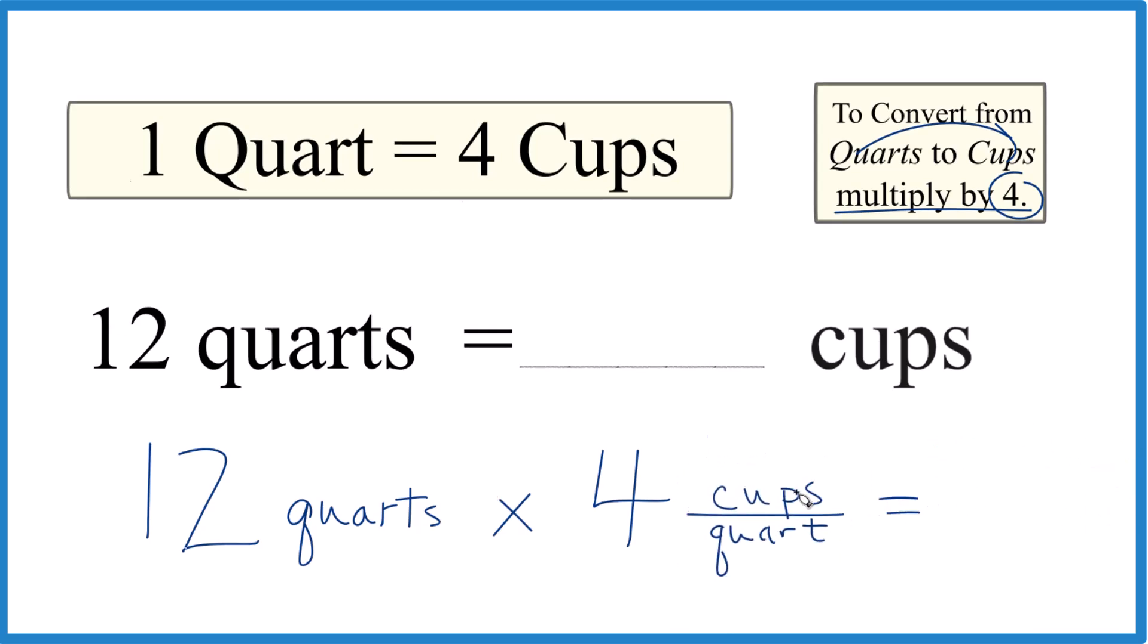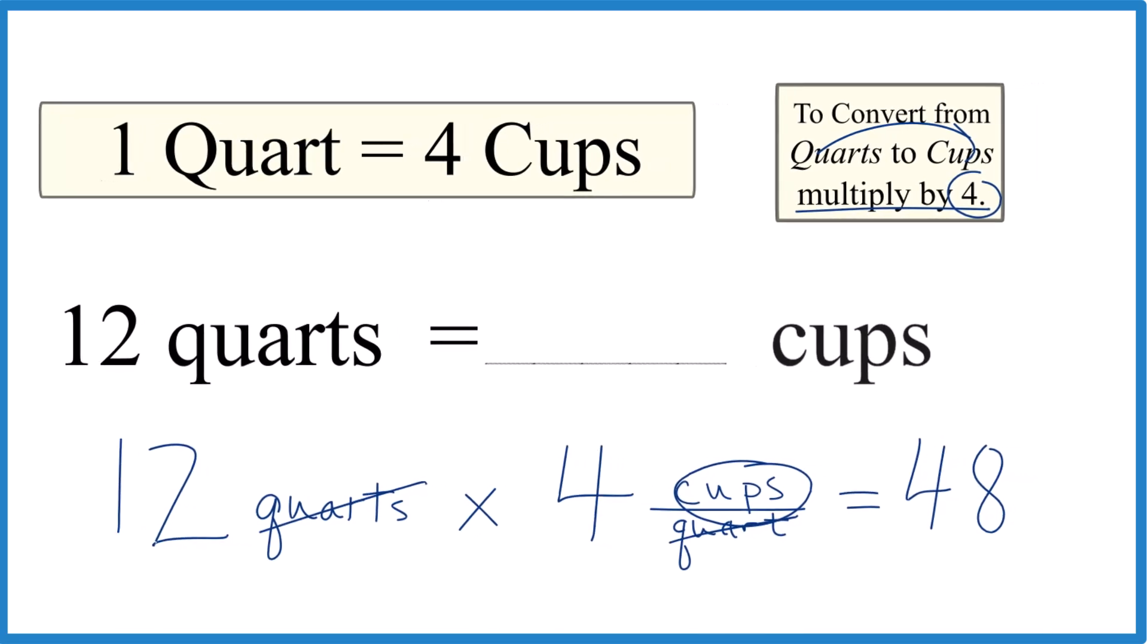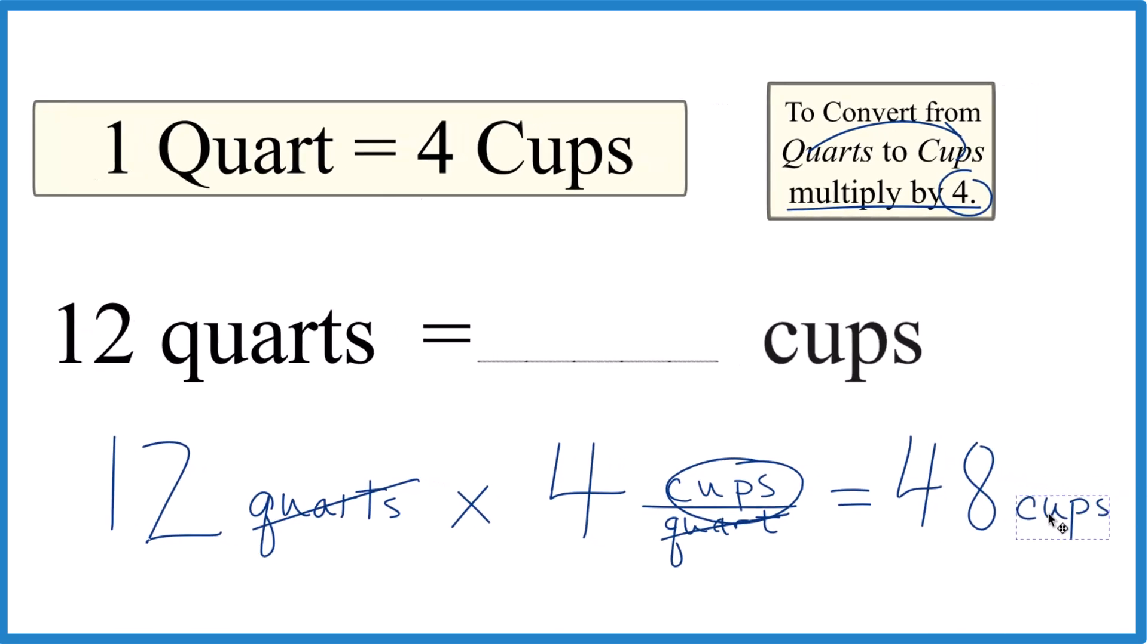So we do the same thing we did before, 12 times four. That gives us that 48. But since we have quarts here, and then on the bottom that cancels out, we end up with cups. That's what we're looking for. So we know we did it right.